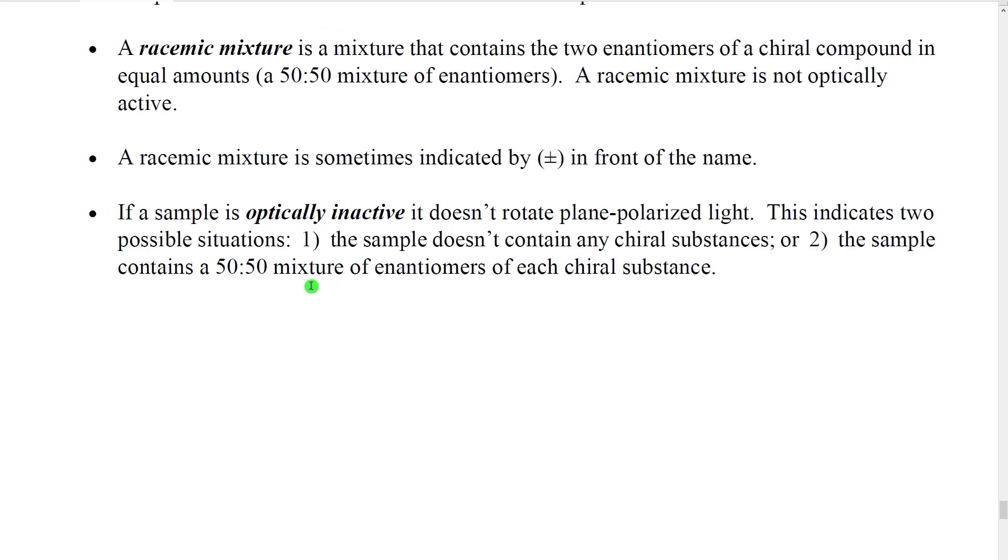So, if a sample doesn't have a net rotation of plane-polarized light, we say it is optically inactive. This indicates one of two different things. It could mean that the sample doesn't contain any chiral substances. Molecules that are achiral, in other words not chiral, these molecules don't rotate plane-polarized light. Or, it could indicate that the sample contains a 50-50 mixture of enantiomers of a chiral substance. The confusing thing is that optically active has, in some cases, become sort of a synonym for chiral, which is not really a correct usage. So, we have to be careful about how the language is being used, and look very carefully to understand what somebody may be stating about a particular sample and the way it interacts with plane-polarized light.